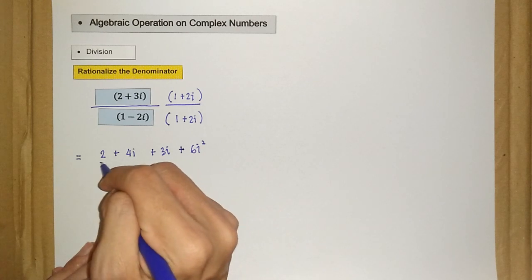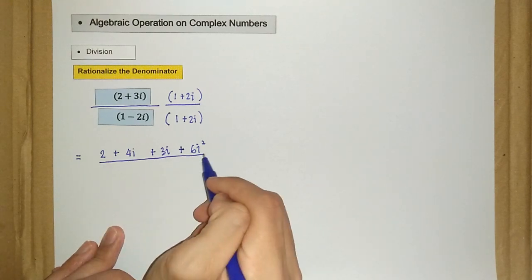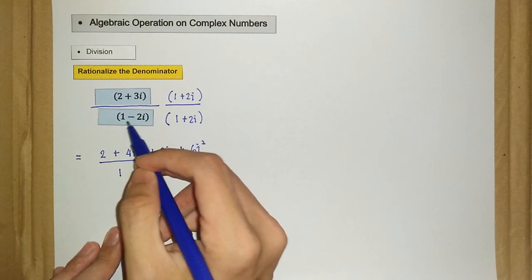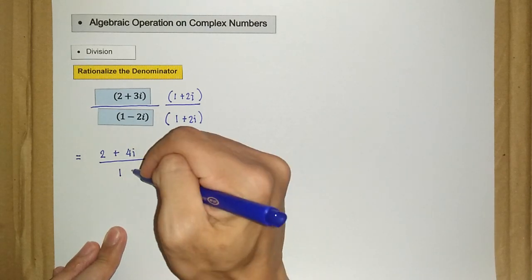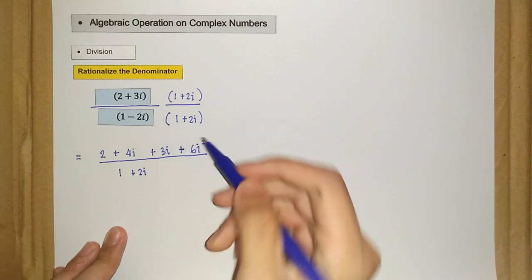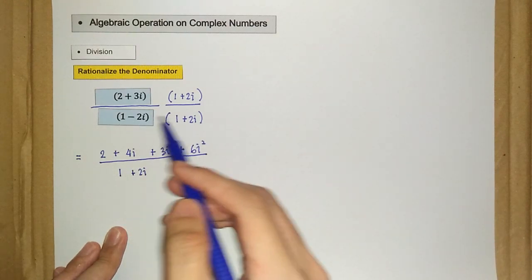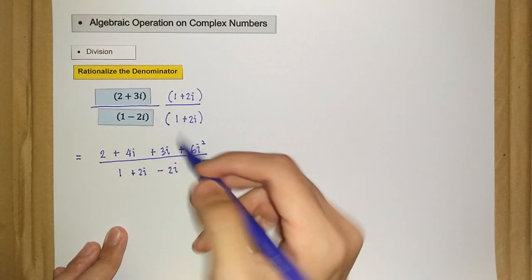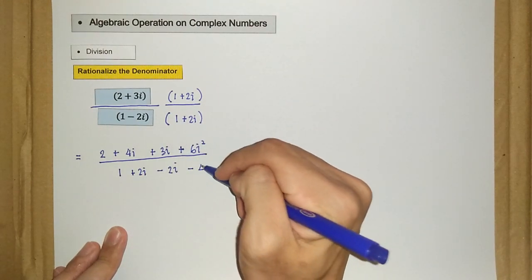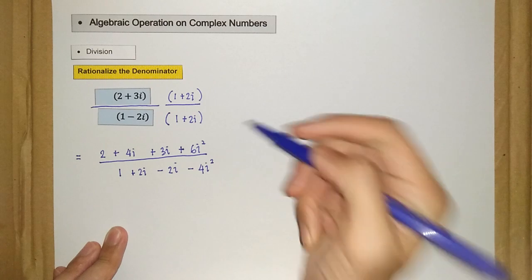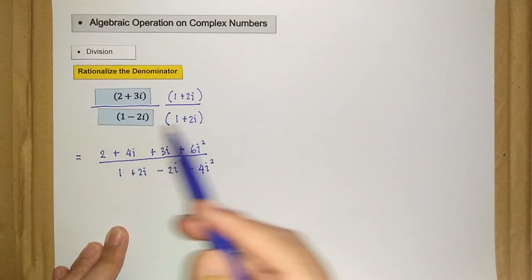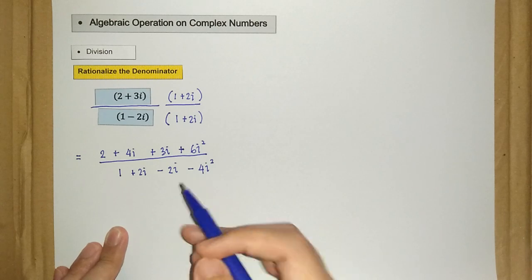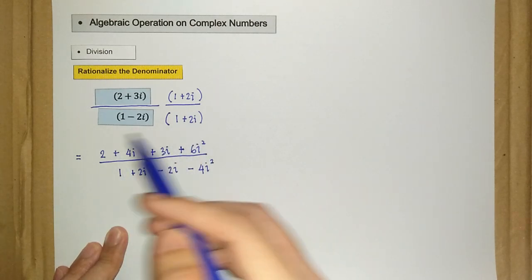For the denominator: 1 times 1 is 1, 1 times 2i is plus 2i. Next, negative 2i times 1 is negative 2i, and negative 2i times positive 2i is negative 4i squared.